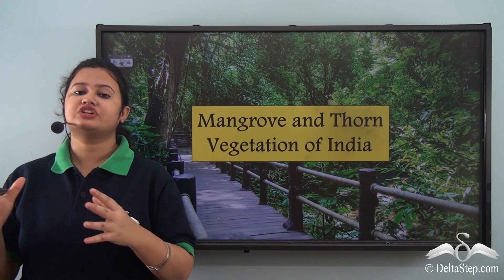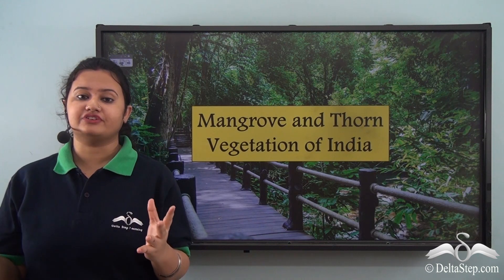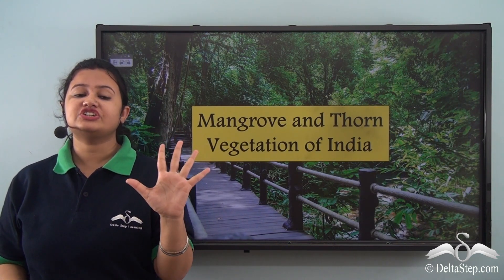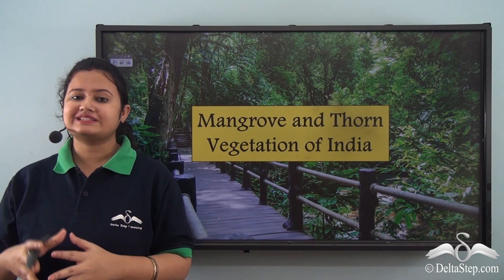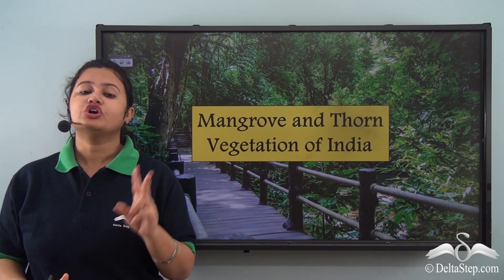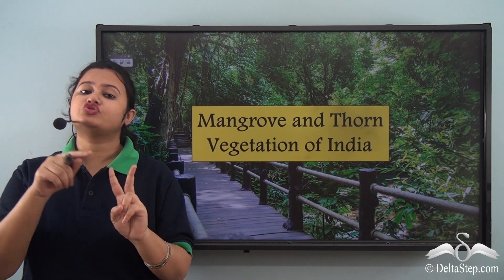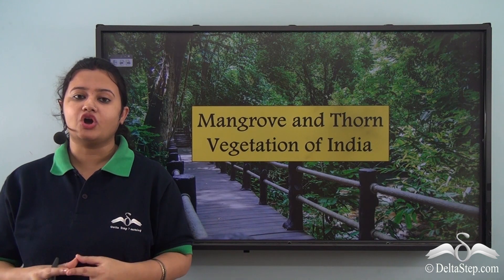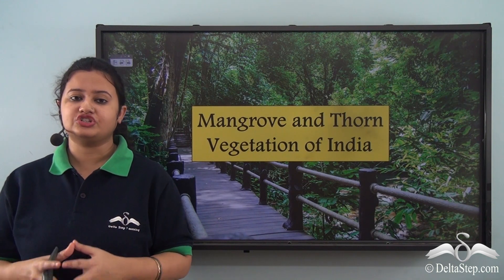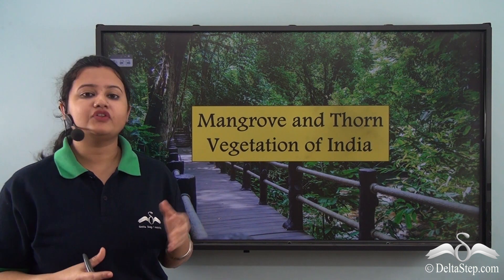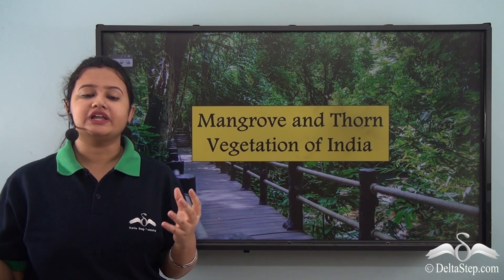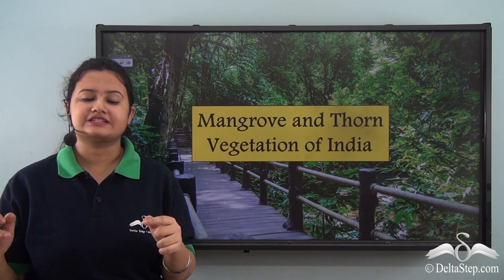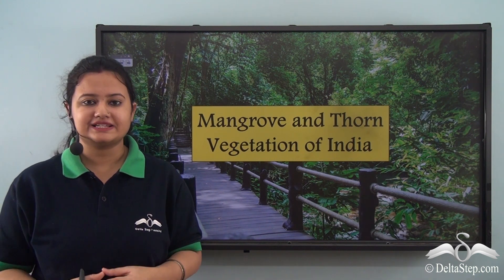We know India's natural vegetation is very diverse. There are actually five major types of vegetation found in India. In our previous lesson we already discussed about two major types, that is the tropical rainforest and deciduous forest. In this lesson we shall be focusing on two other types of vegetation, that is the mangrove forest and the thorn forest. So let's begin today's lesson.